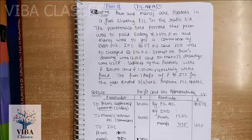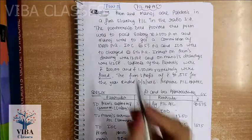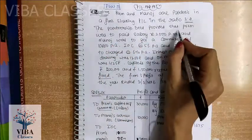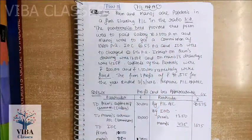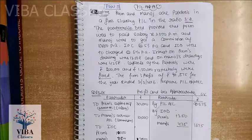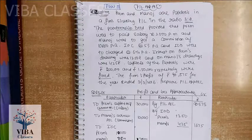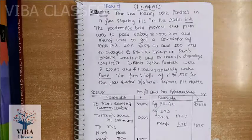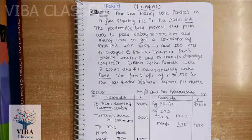So what is the question? Prem and Manoj are partners in a firm sharing profit and losses in the ratio 3:2. The partnership deed provides the following terms. Remember, if there is no partnership deed, then there is no salary or commission, interest on capital is allowed, interest on drawing is charged, profit sharing ratio is equal, and interest on loan is 6% per annum.